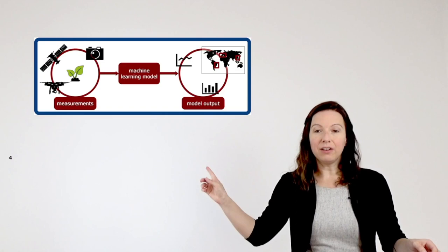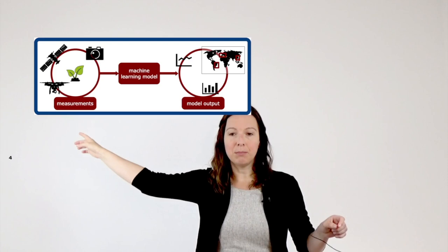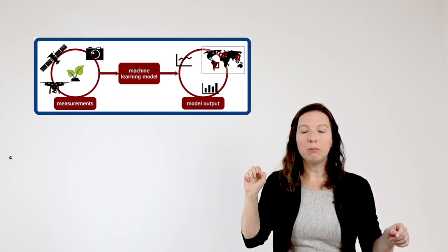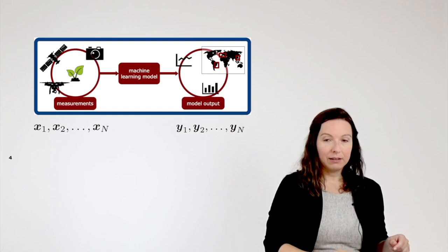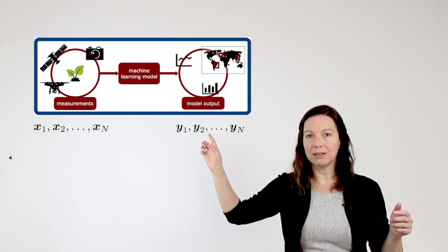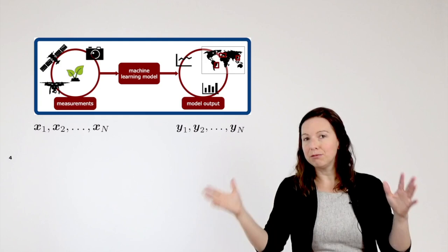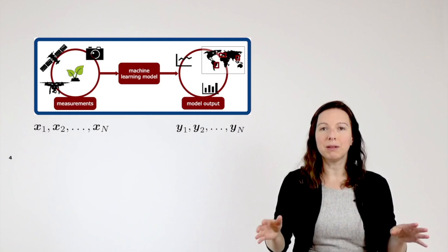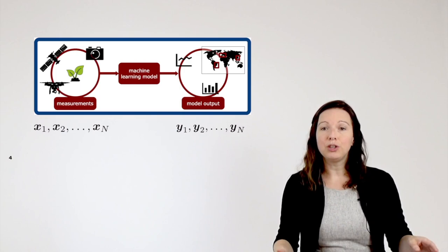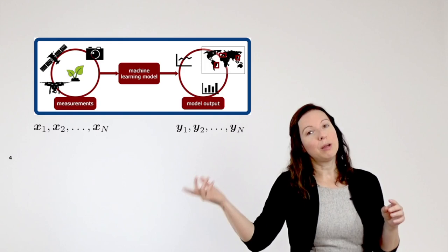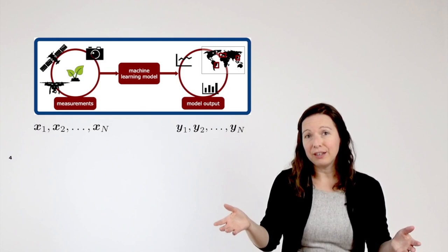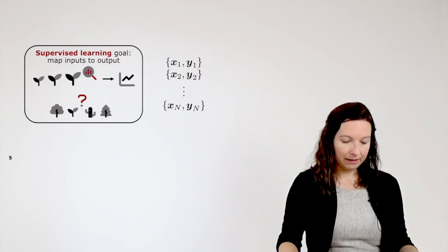Here you can see the typical machine learning pipeline. We have given some measurements — they can for example be close range or satellite based — and we want to have a specific output. The measurements are denoted by x and the target output, also known as the labels, are given as y. The machine learning model is simply put a mathematical relationship between the input and the output, and it usually contains a lot of parameters which are learned so that the input can be mapped to the output. Once such a model is learned it can be applied to different but similar input data.